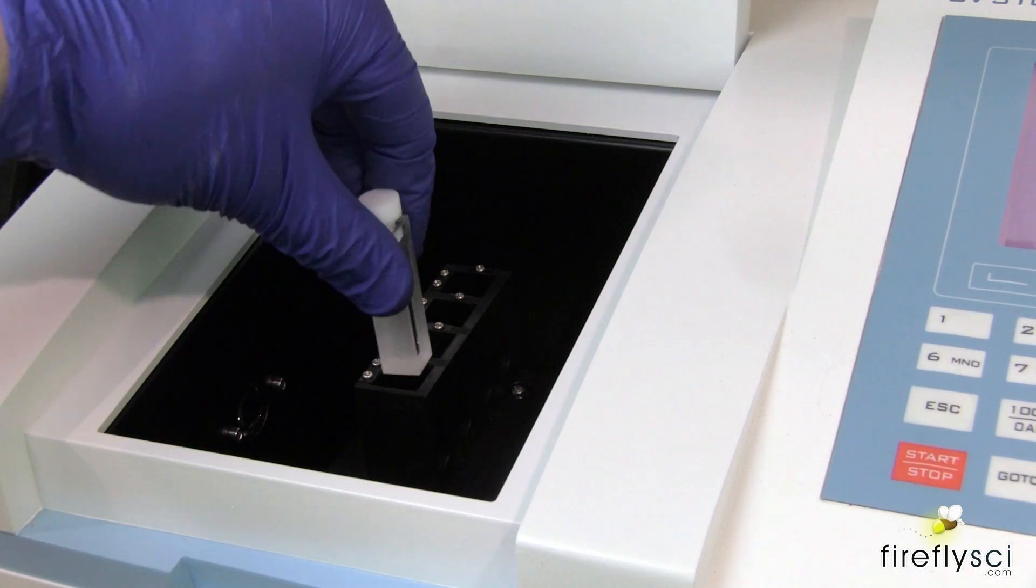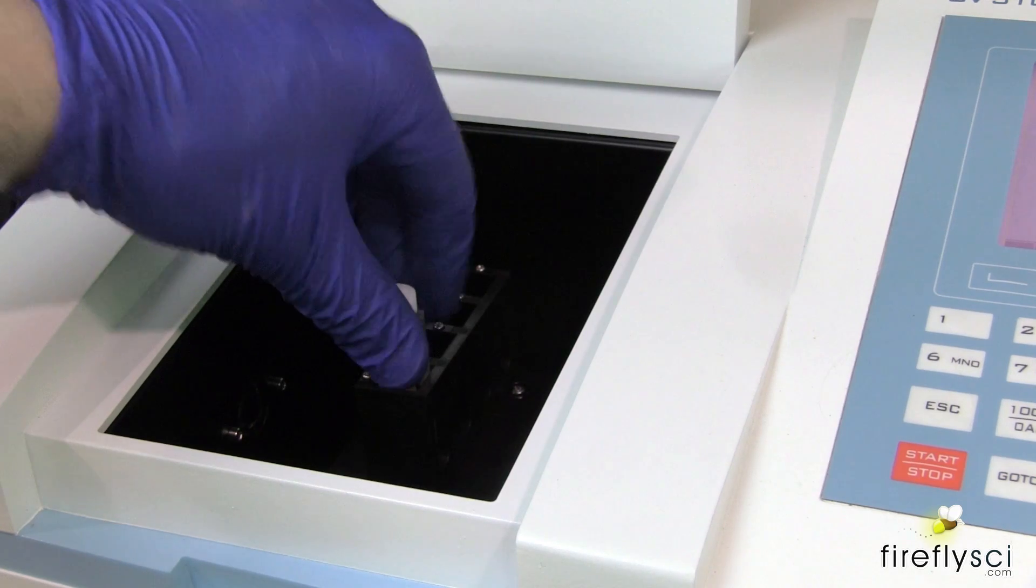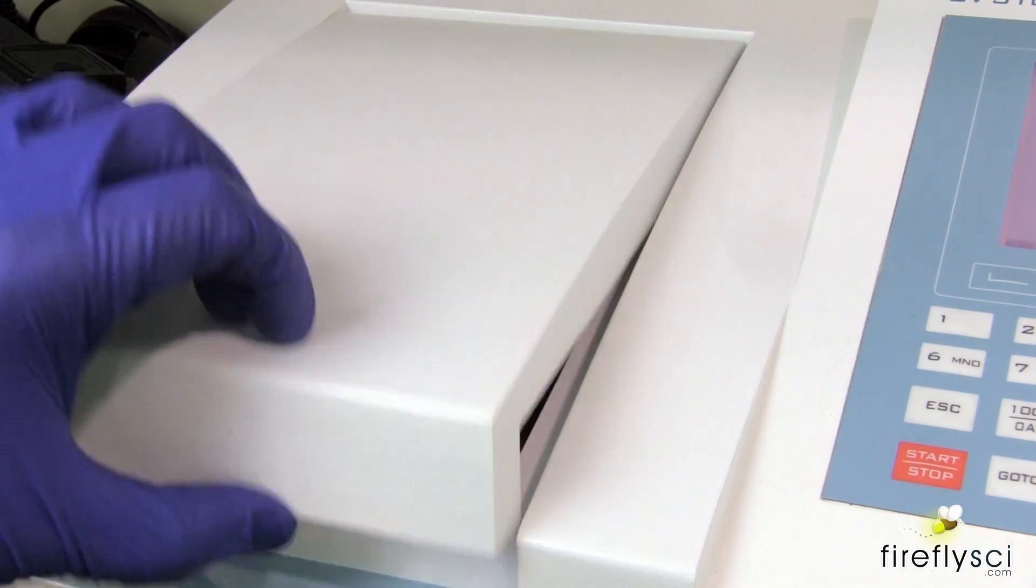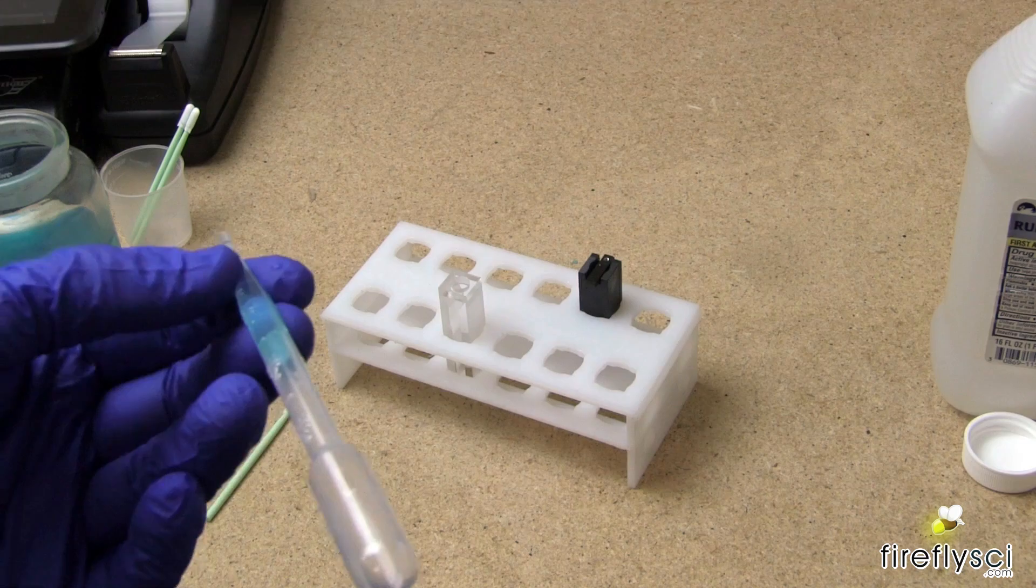So what we've just done is tell the machine to ignore the cuvette and the water and only give us the absorbance for our test sample. Since our test sample is mixed with water, we want to make sure we eliminate the water element.